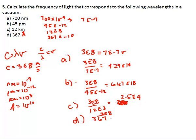And then the last one, 3e to the 8th over 367e to the negative 10th, and that ends up being 8.17e to the 15th. There you go.